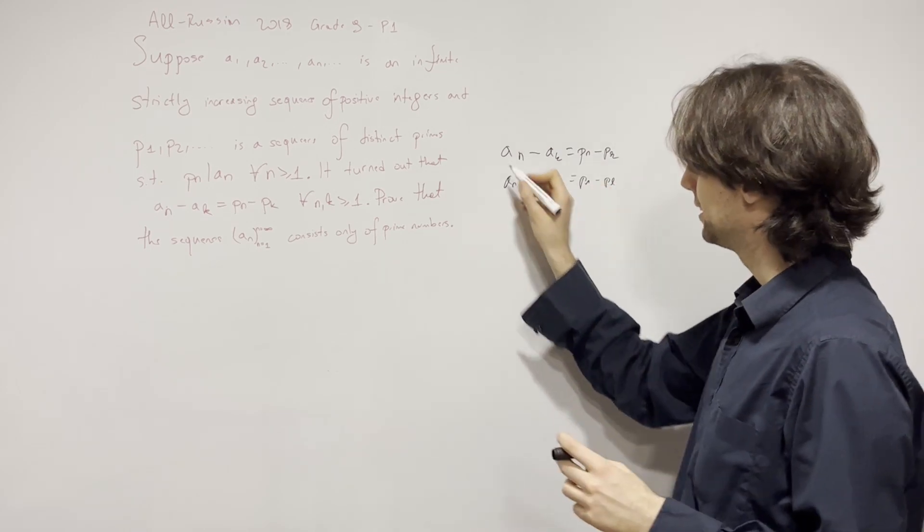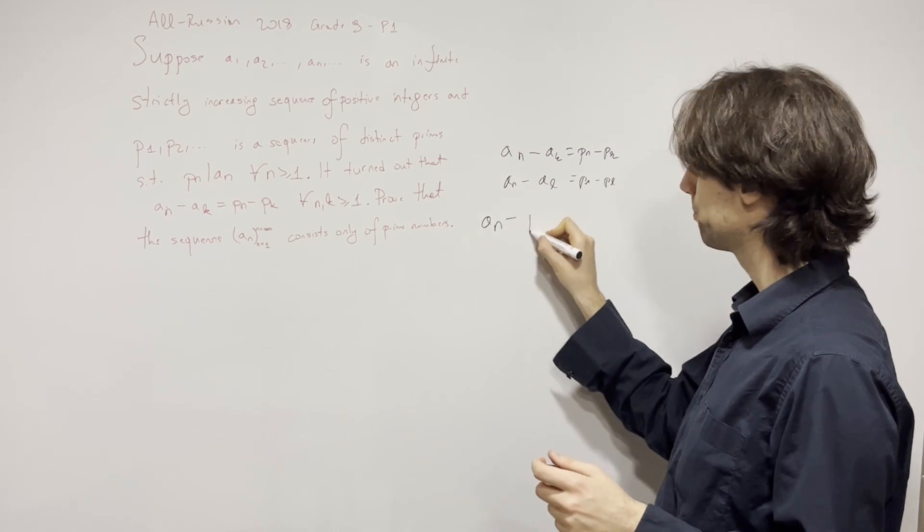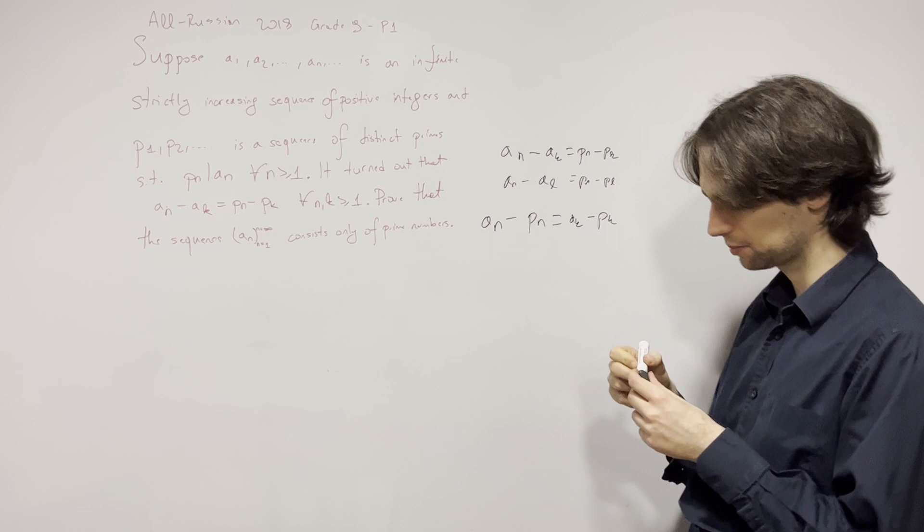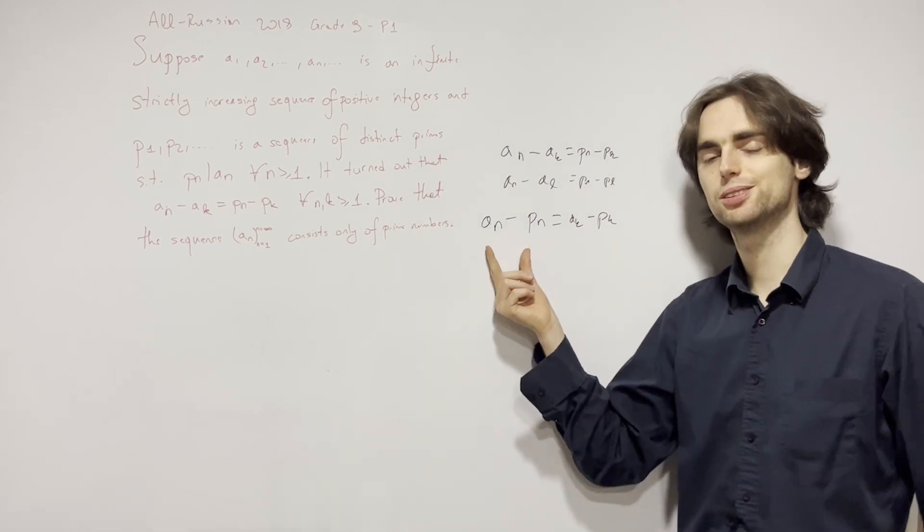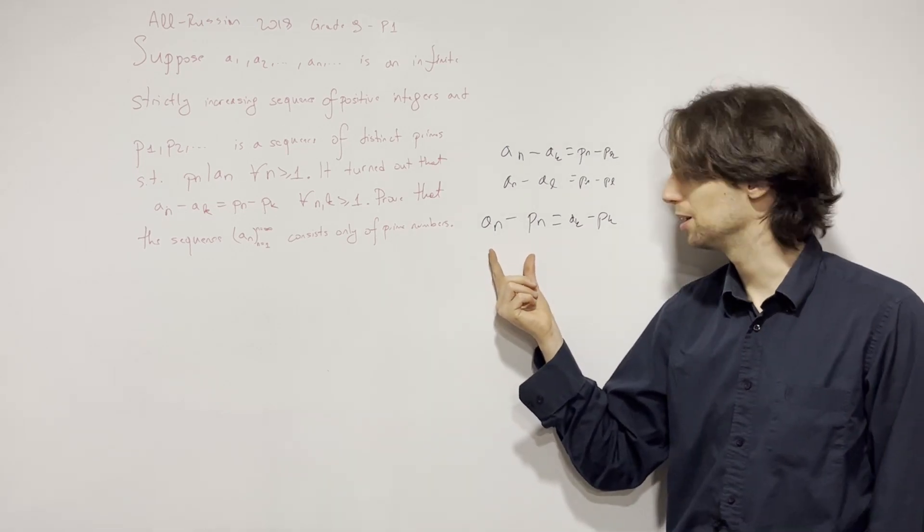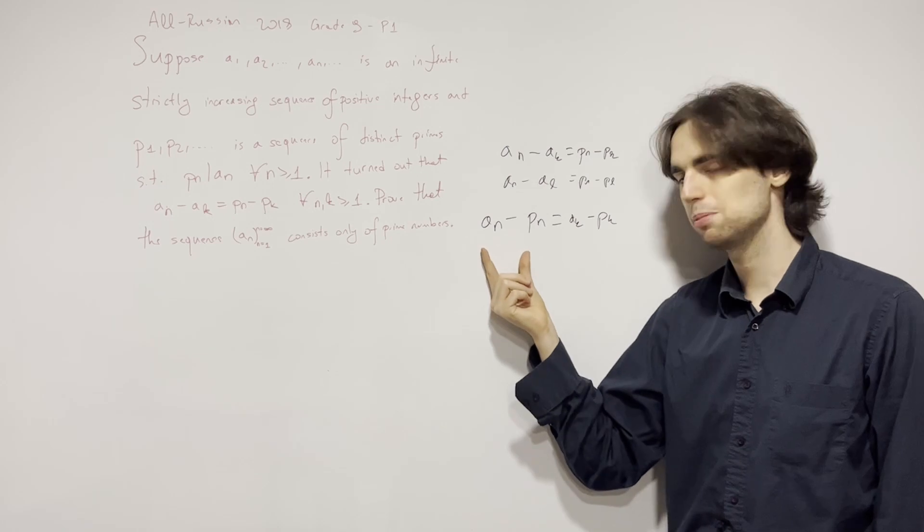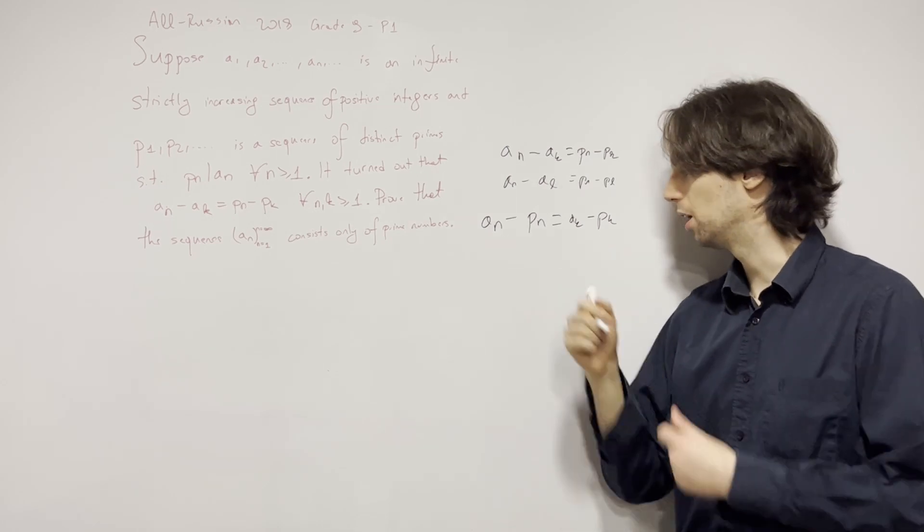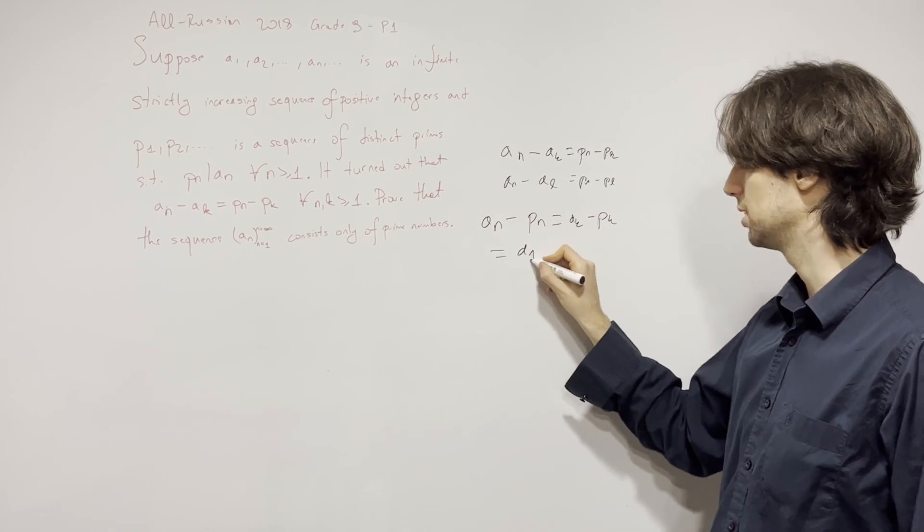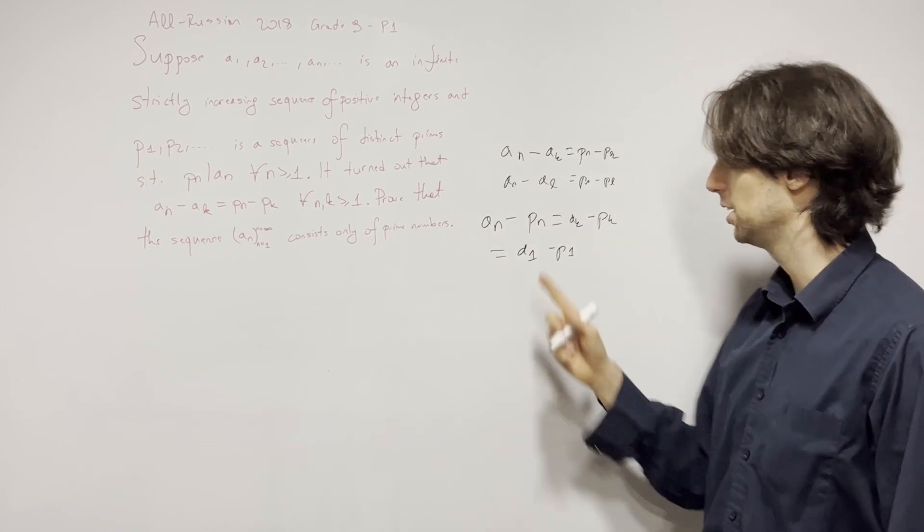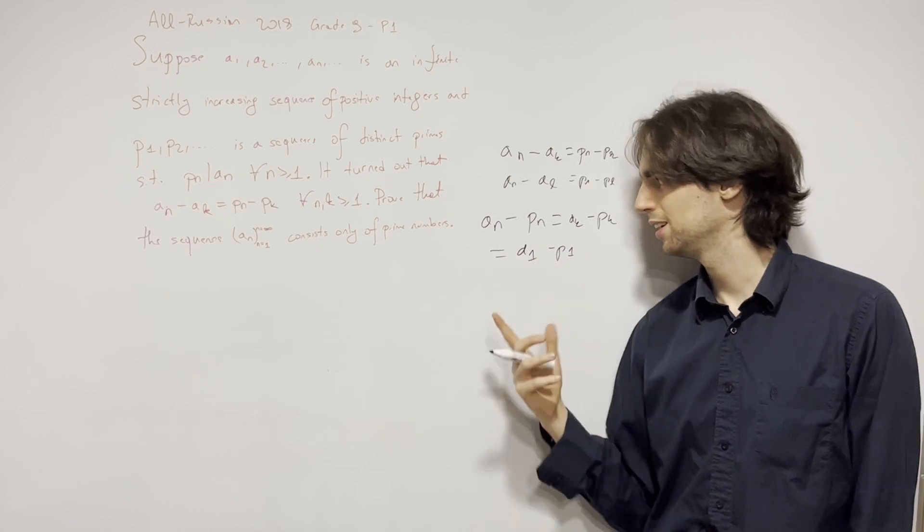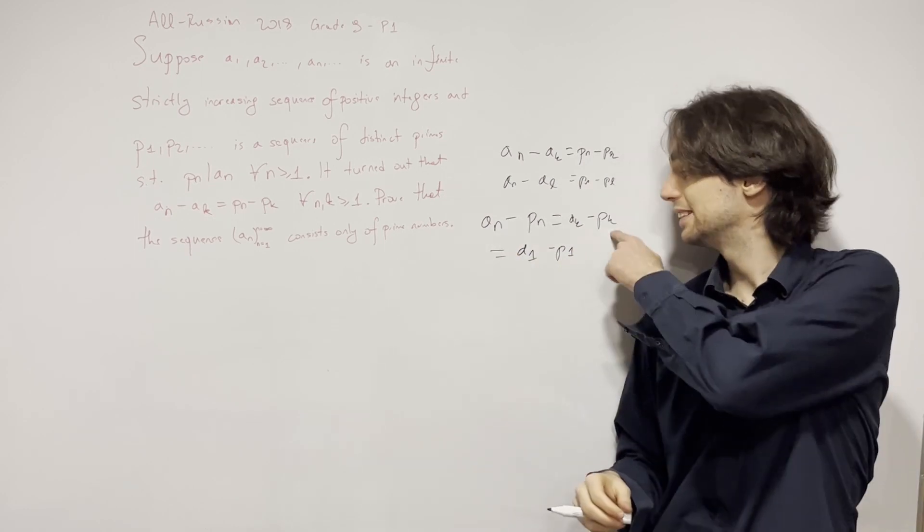This is equivalent to a_n minus p_n equals a_k minus p_k. Why is this stronger? Well, this applies for every pair of n and k. If I fix k to be one, I get a_n minus p_n equals a_1 minus p_1, and I let n vary from 2 to infinity.